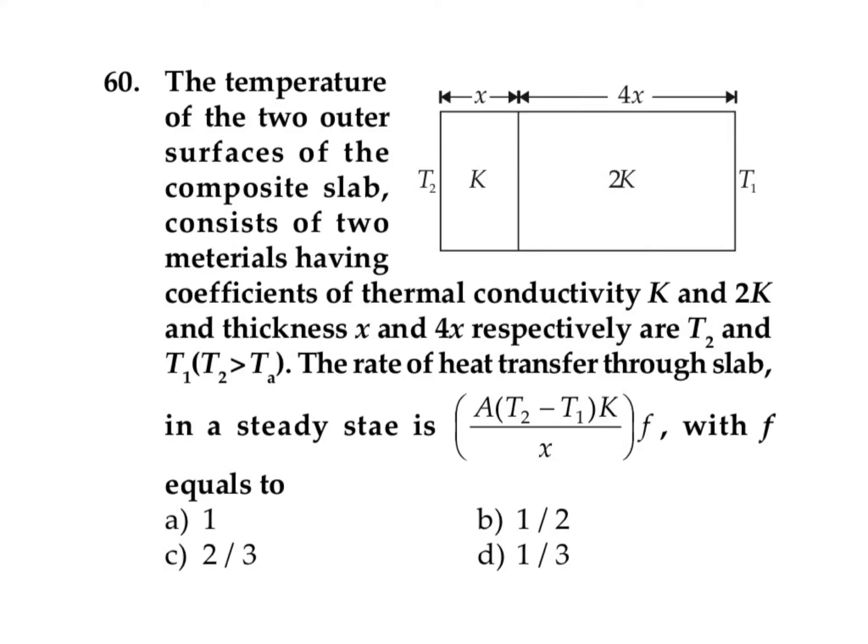In this question, the temperature of two outer surfaces of a composite slab consisting of two materials having thermal conductivity K and 2K and thickness x and 4x respectively are T2 and T1, where T2 is greater than T1. The rate of heat transfer through the slab in steady state is A(T2-T1)K/x